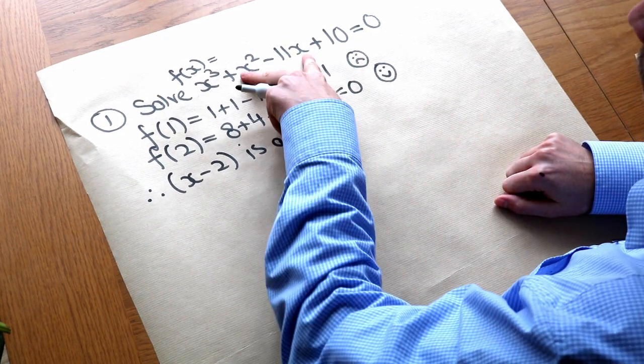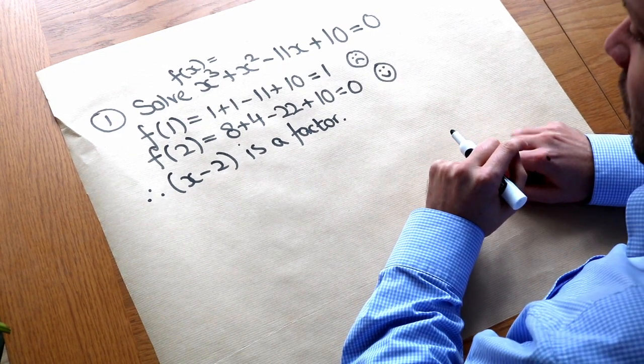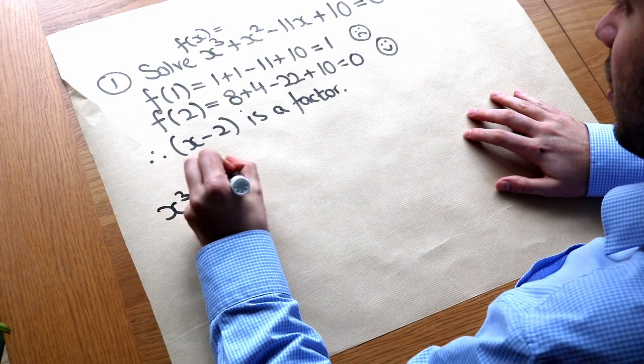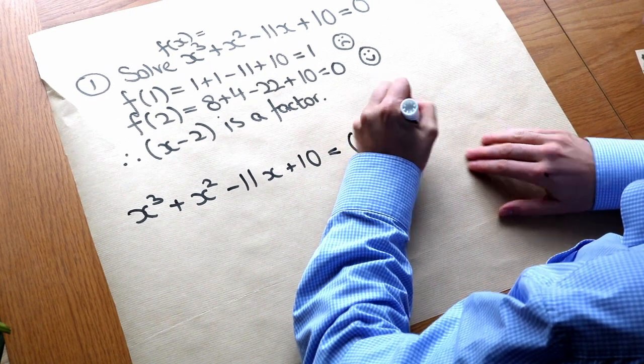So at that point we can use our favorite method in order to write this as x minus two times something. We could use long division or we can use my preferred method which is to kind of use intelligent guessing to get the further bracket. So it's x minus two times something.